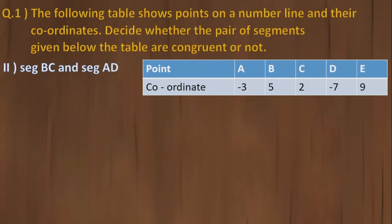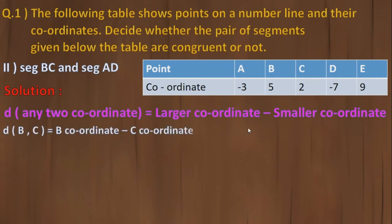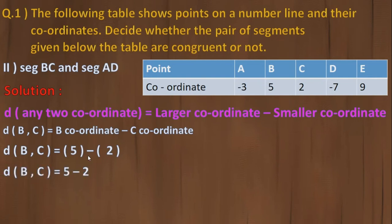Now the second part of question 1: find BC and segment AD. To find BC, check B's coordinate which is 5 and C's coordinate which is 2. Using the distance formula — larger coordinate minus smaller coordinate — B is larger, so B coordinate minus C coordinate: 5 minus 2 equals 3. So BC's distance is 3.